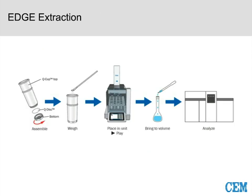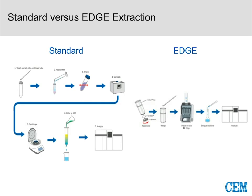As an alternative, I want to talk about using the Edge extraction system. The Edge process: you assemble your Q-cup, which holds your sample, weigh your sample — that one gram — into the Q-cup, load it into the Edge, and run your method. The method lasts just under 10 minutes, and at that point you have your extract ready to go. Compared to the traditional process, the Edge cuts out many manual steps, gives us automation, removes the human element, and provides efficiency, traceability, and reporting options.